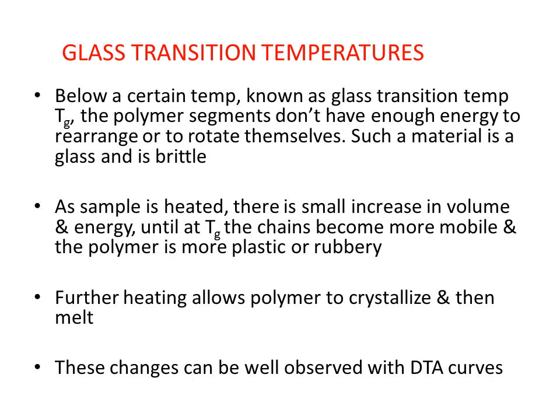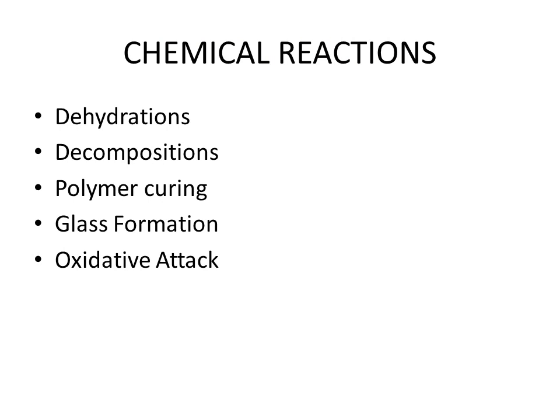Below the glass transition temperature, polymer segments don't have enough energy to rearrange or rotate themselves — such a material is glass-like and brittle. As the sample is heated there is a small increase in volume and energy until the glass transition temperature is achieved, where the chains become more mobile and the polymer becomes more plastic or rubbery. If heating continues, the polymer may crystallize and then finally melt. All of these changes can be well observed with DTA curves.